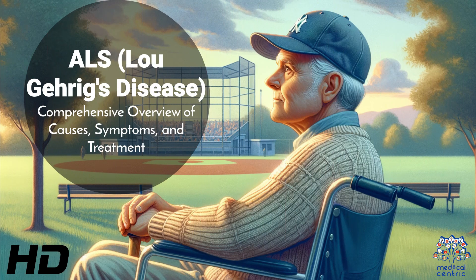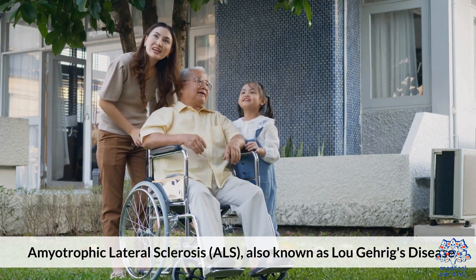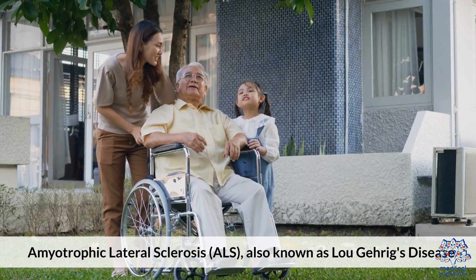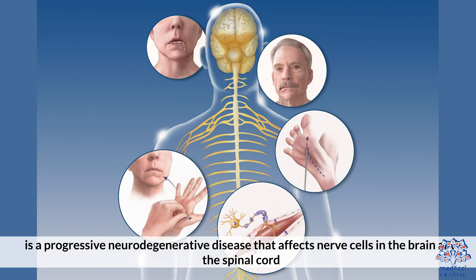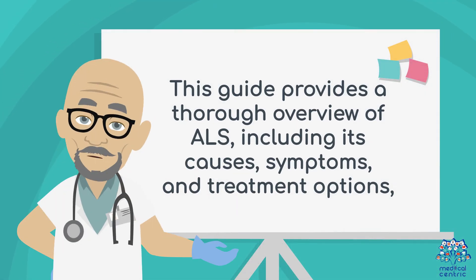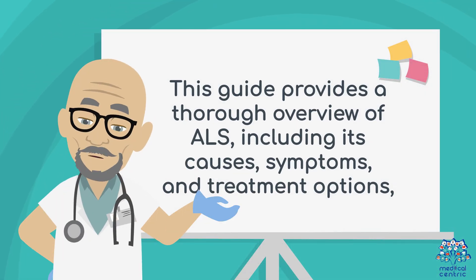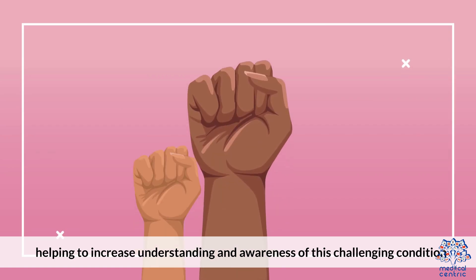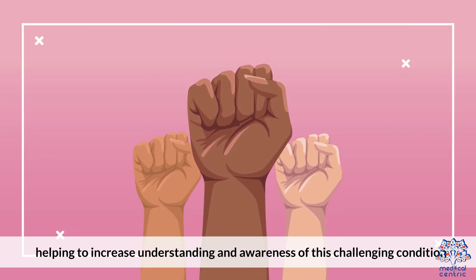Today's medical-centric topic is ALS, Lou Gehrig's Disease: a comprehensive overview of causes, symptoms, and treatment. Amyotrophic Lateral Sclerosis, ALS, also known as Lou Gehrig's Disease, is a progressive neurodegenerative disease that affects nerve cells in the brain and the spinal cord. This guide provides a thorough overview of ALS, including its causes, symptoms, and treatment options, helping to increase understanding and awareness of this challenging condition.